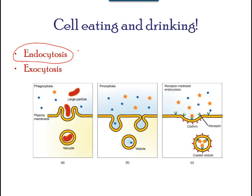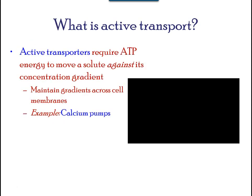Phagocytosis is cell eating, and pinocytosis is cell drinking. Endocytosis can also employ binding proteins in the plasma membrane that are specific for certain substances; this is called receptor-mediated endocytosis.